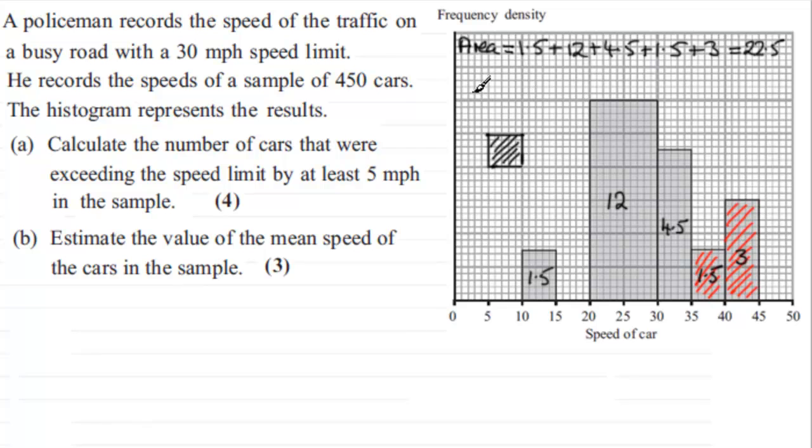So when we add up 1.5 plus the 12 plus the 4.5 and the 1.5 and the 3, this total area comes to 22.5. So cars per square equals 450 divided by 22.5 which gives us 20 cars per square.